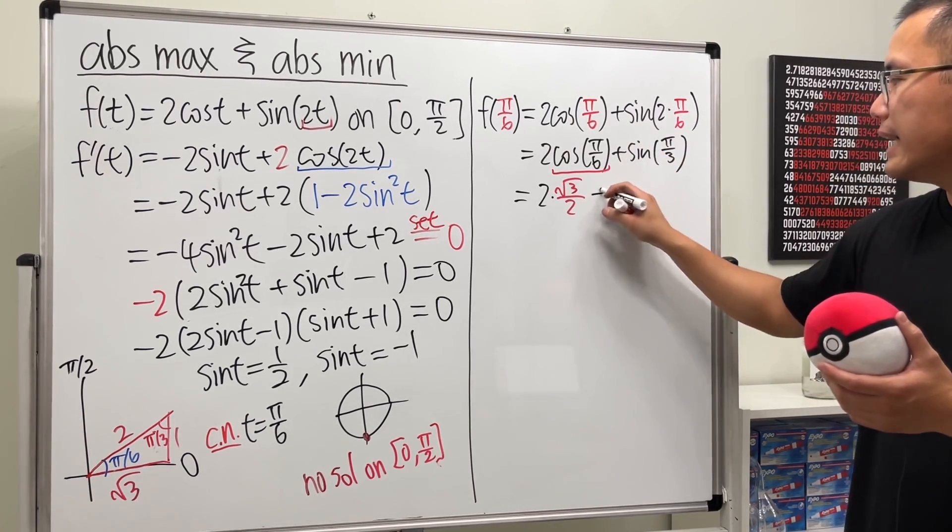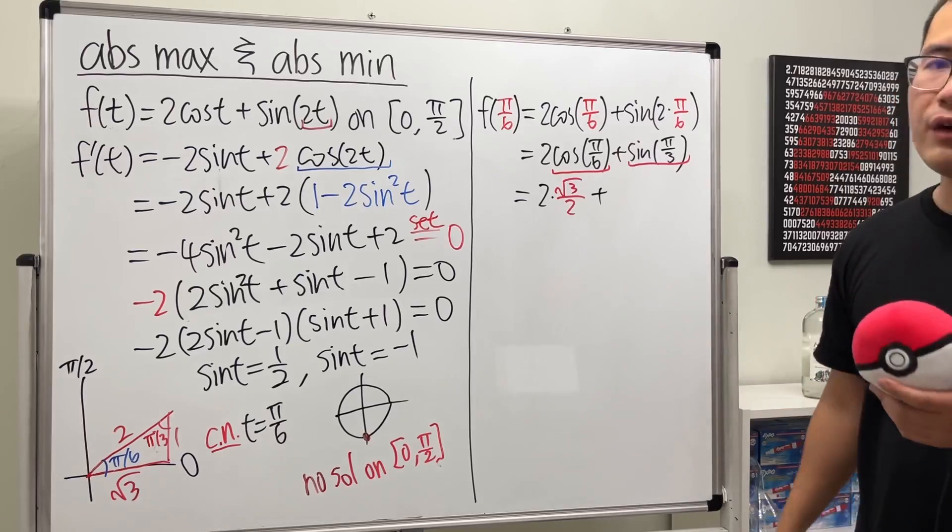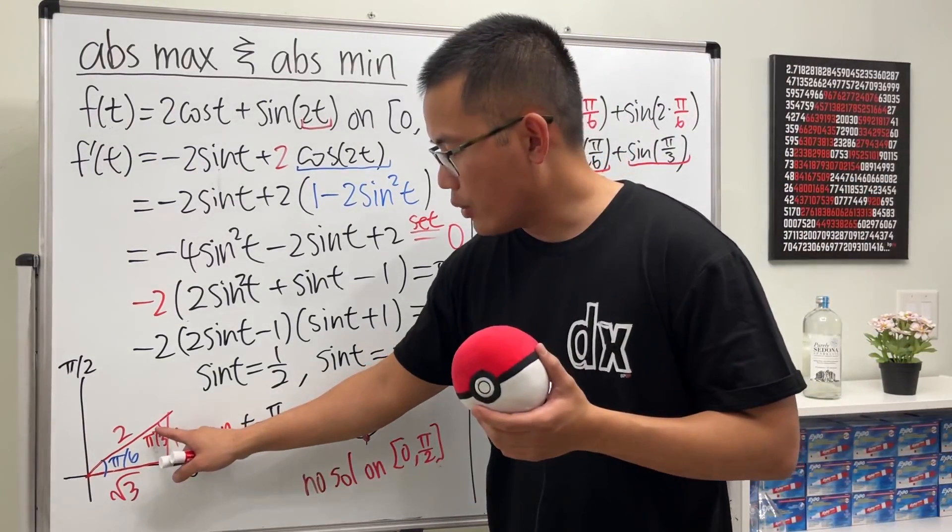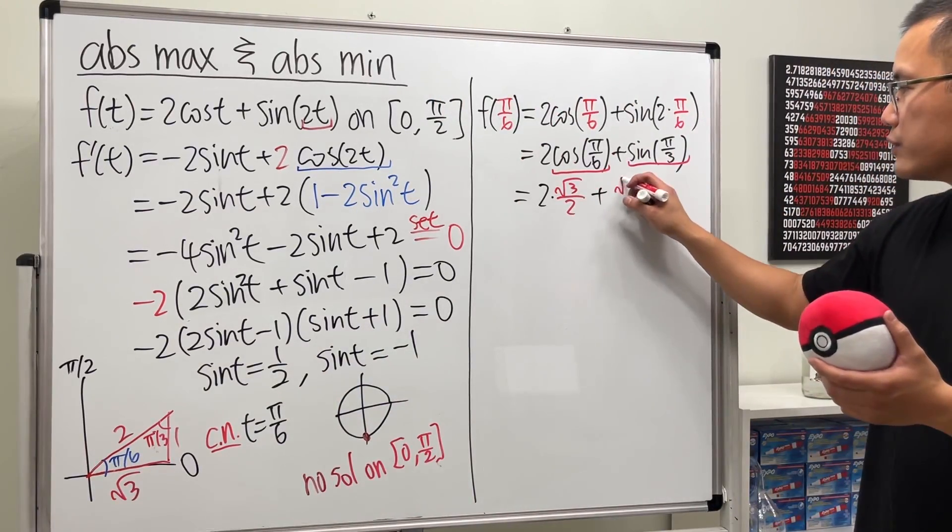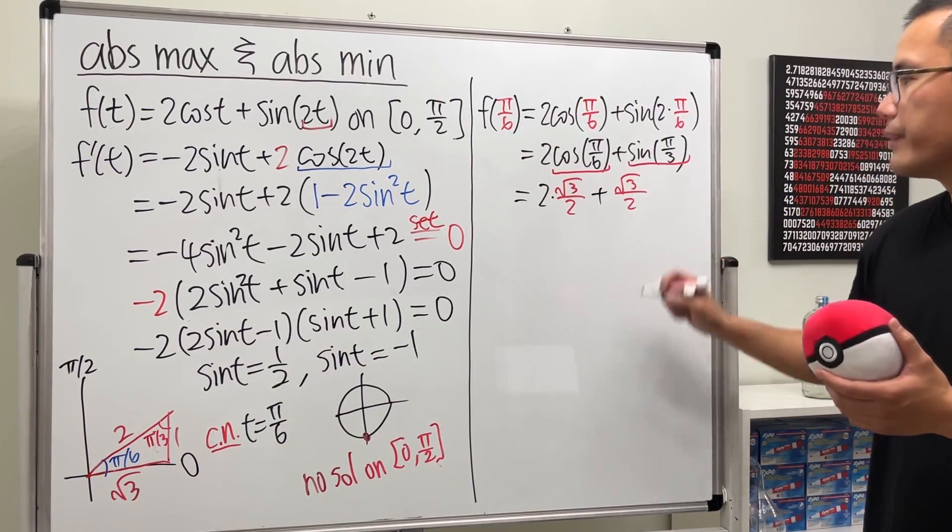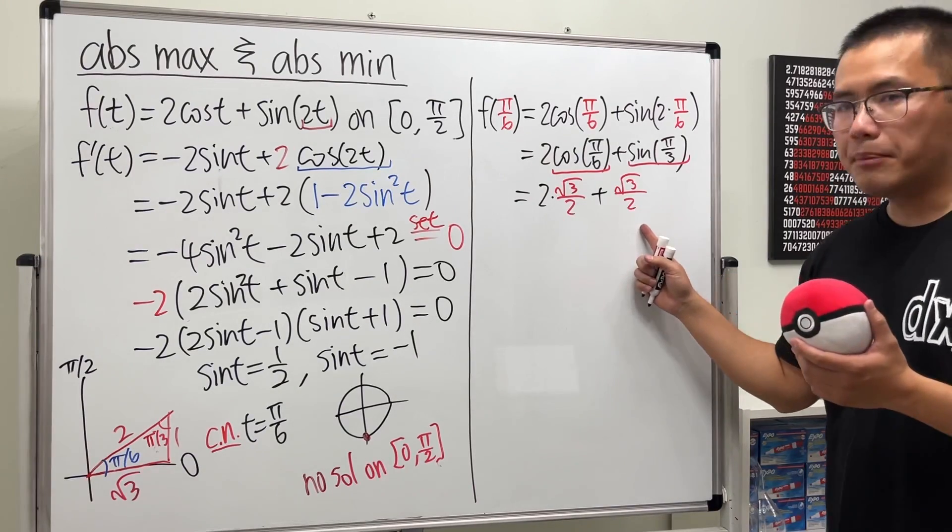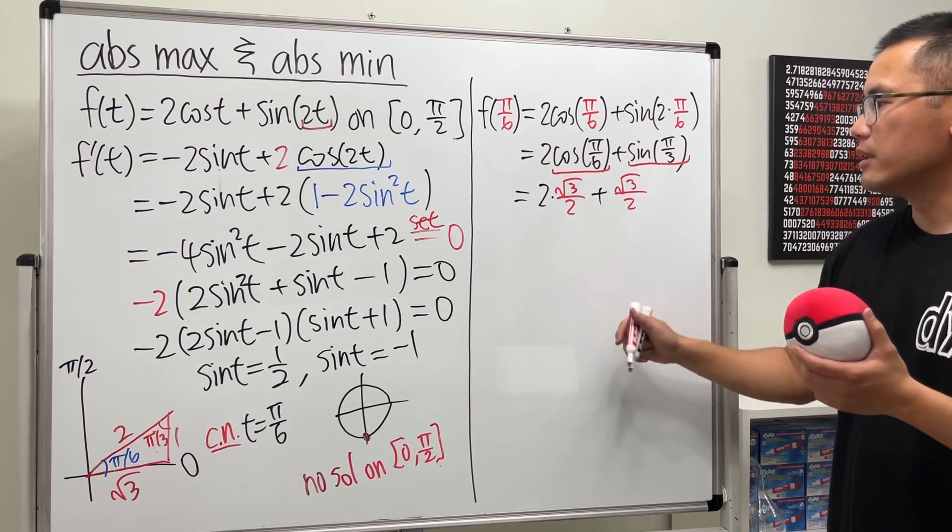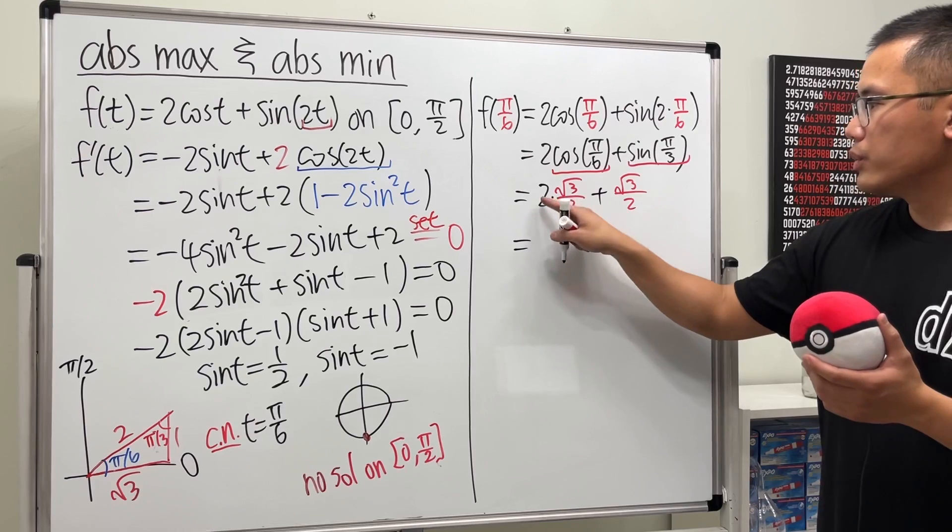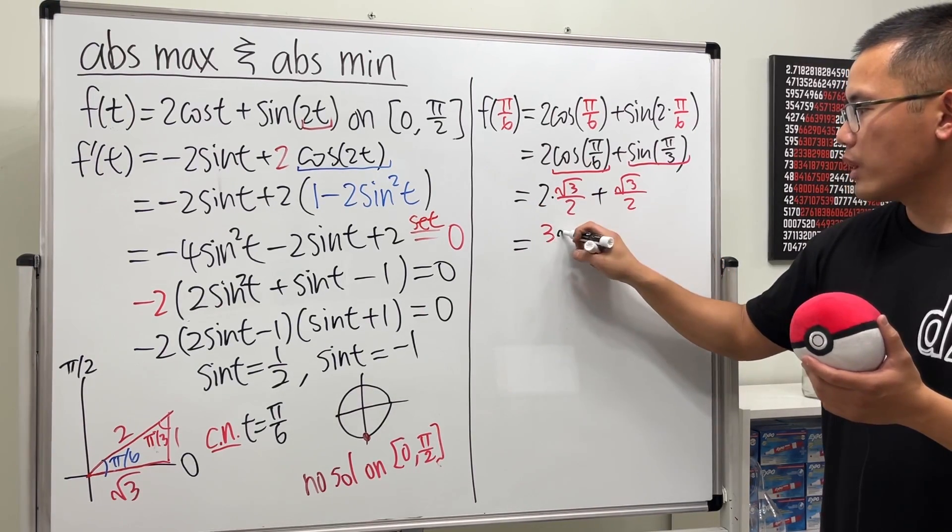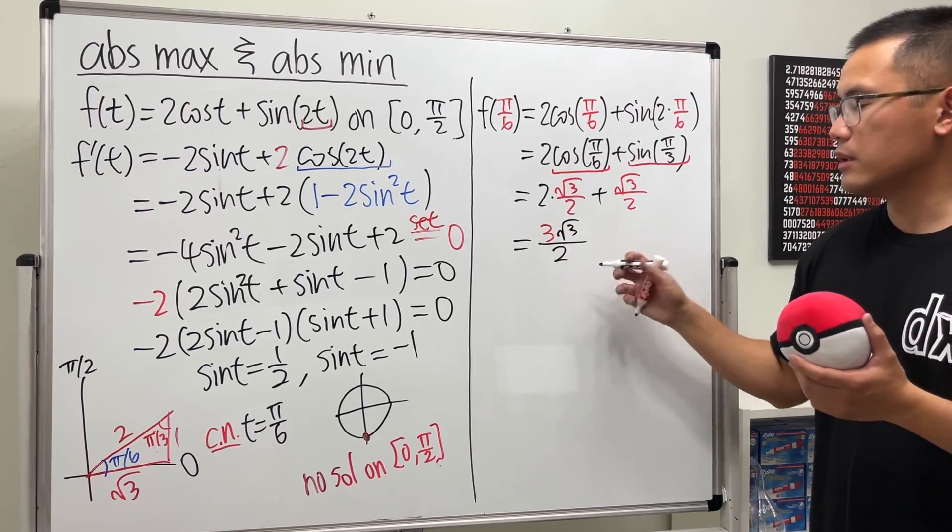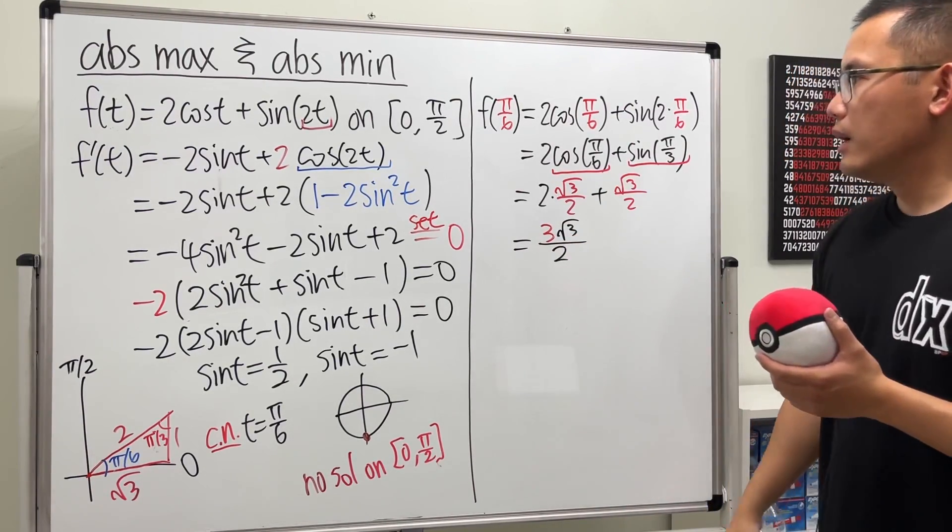And then next, we add sin(π/3). We look at this angle and do opposite over hypotenuse. So that's also √3/2. And they have the same denominator. So we can just add the top together. So in fact, 2√3 plus 1√3. We get 3√3. And then over the same denominator, which is 2.